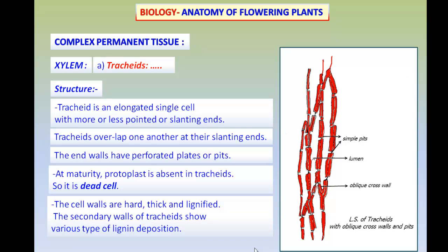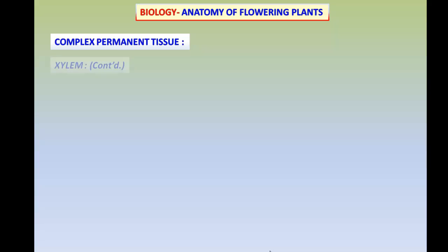The cell walls are thick, and that thickening is due to the deposition of lignin, a process called lignification. The secondary walls of tracheids show various types of lignin deposits.